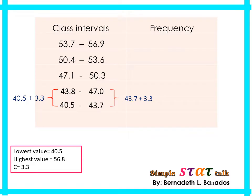The last three class intervals are left for you to work out. You may pause the video and check if your answer matches. The third lower limit is 47.1, obtained by adding 43.8 + 3.3. Did you obtain 50.3 for the third upper limit? That is obtained by adding 47.0 + 3.3.